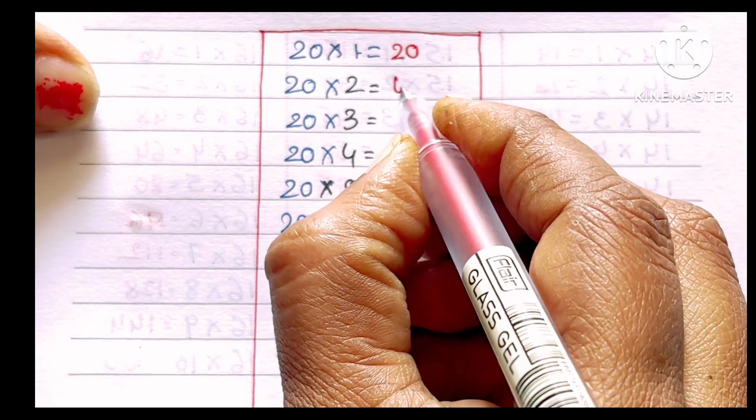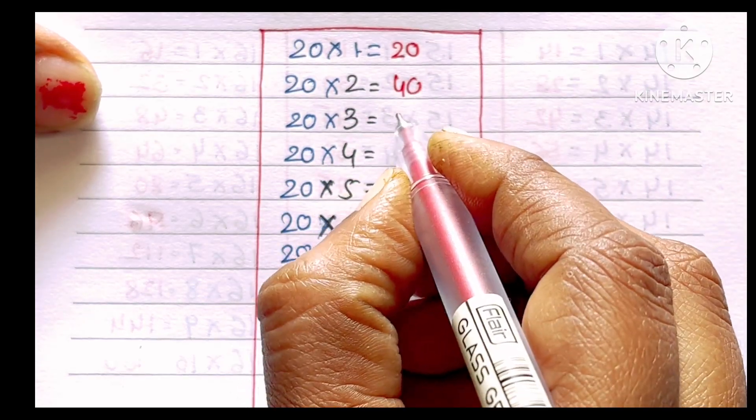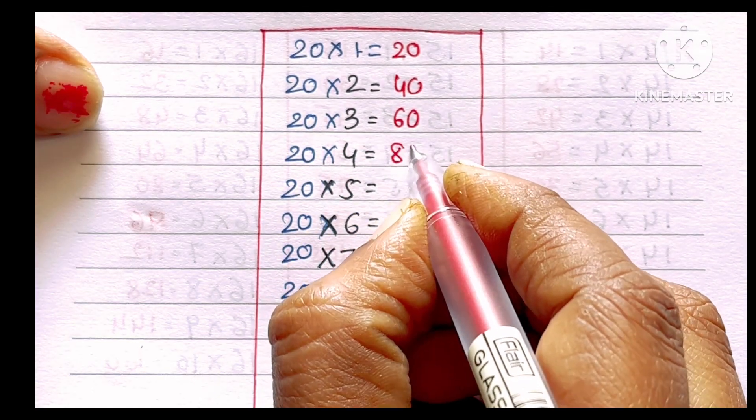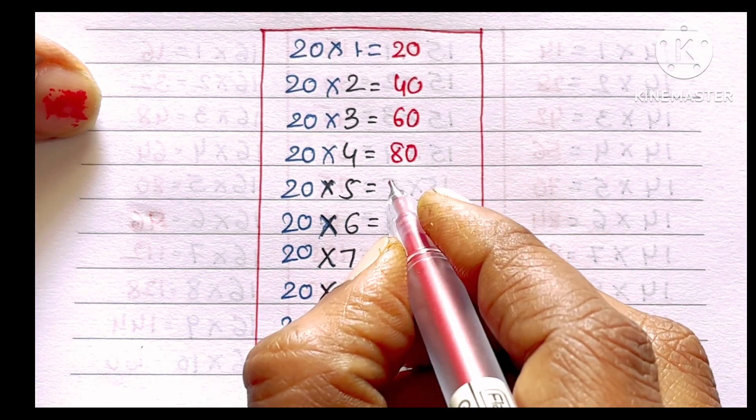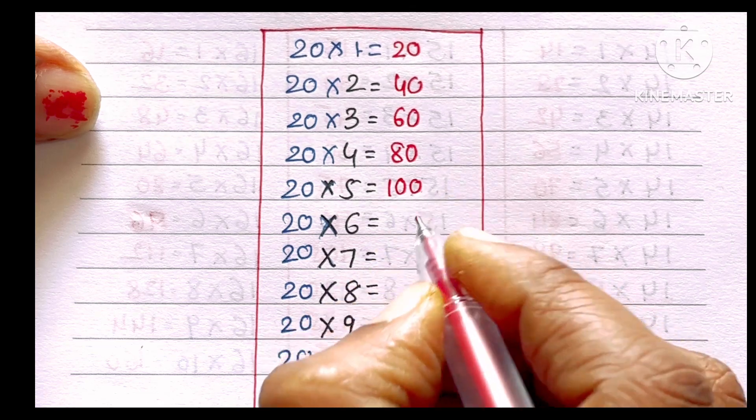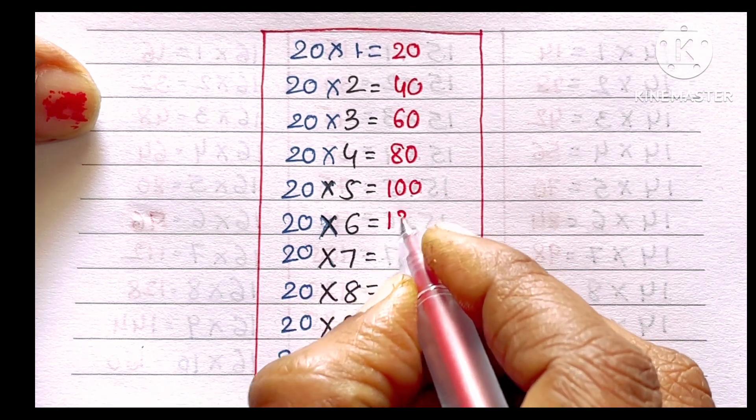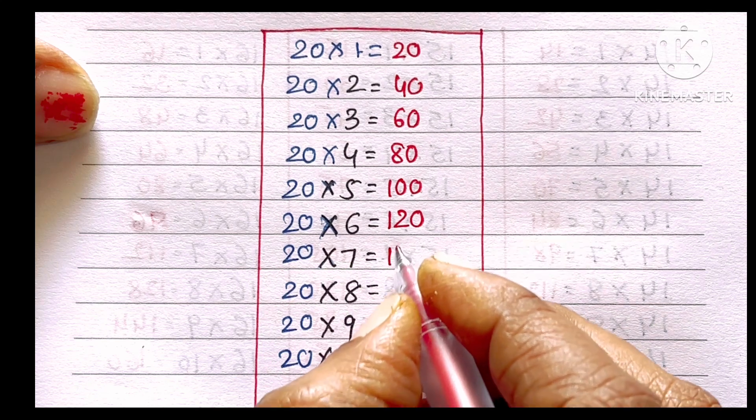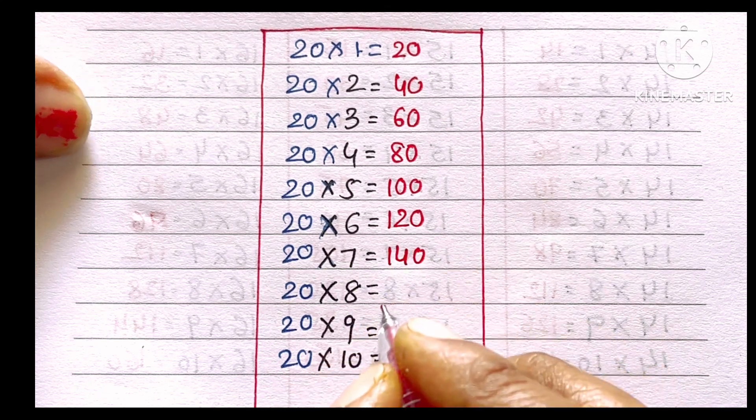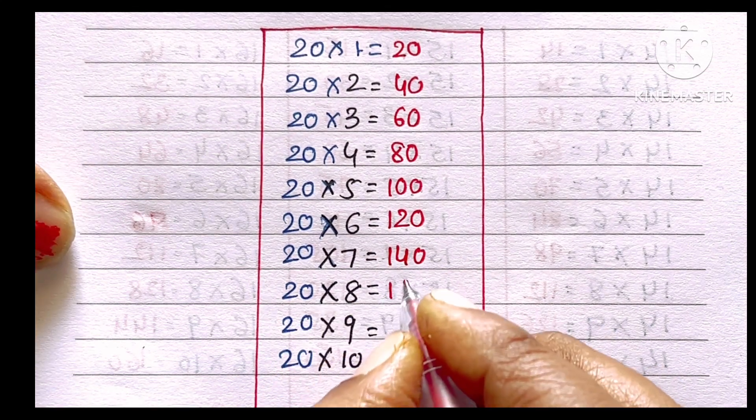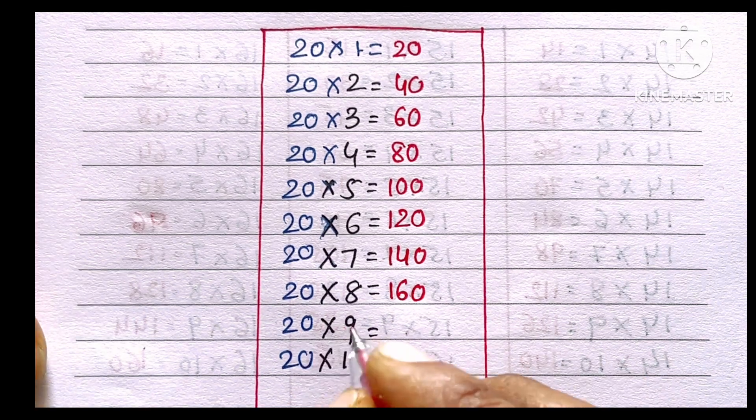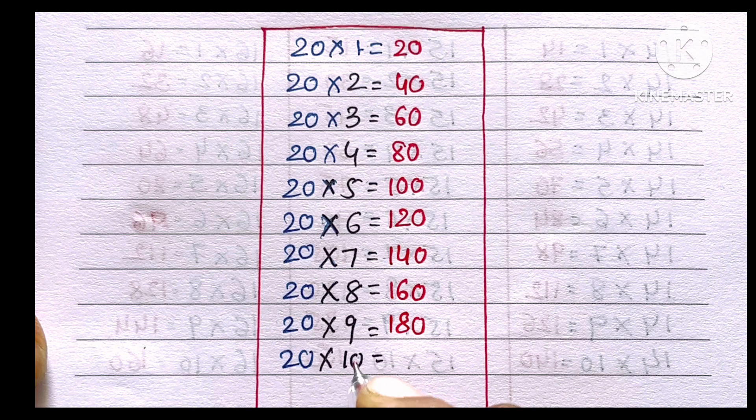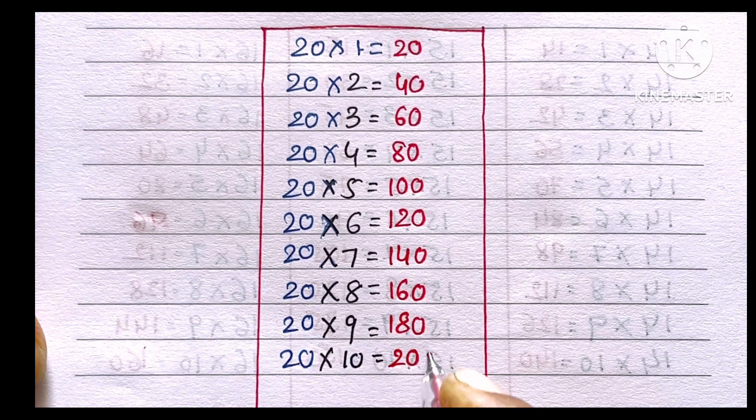20 ones are 20, 20 twos are 40, 20 threes are 60, 20 fours are 80, 20 fives are 100, 20 sixes are 120, 20 sevens are 140, 20 eights are 160, 20 nines are 180, 20 tens are 200.